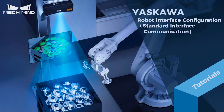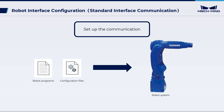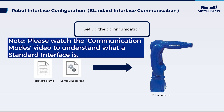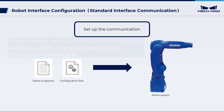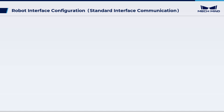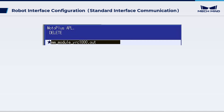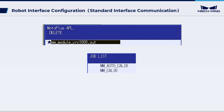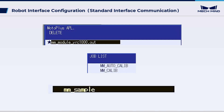This video introduces how to practice standard interface communication on a Yaskawa robot, a process we refer to as loading. Loading is the process of importing robot programs and configuration files into the robot system to establish communication between the vision system and the robot. The content we are loading includes standard interface communication configuration files, calibration files, and sample program files. These files can help users quickly deploy projects. Next, we will proceed with the detailed operational steps.